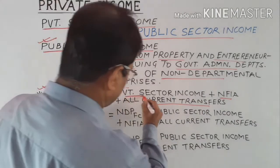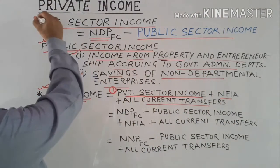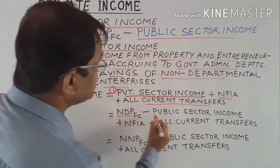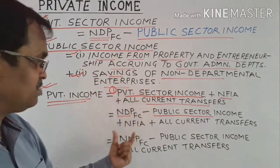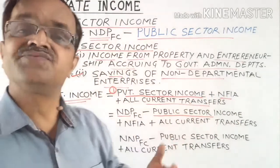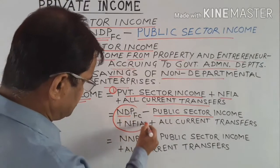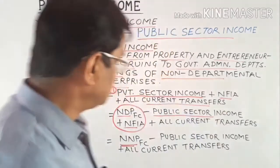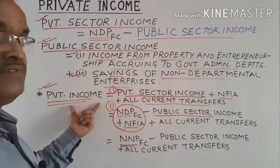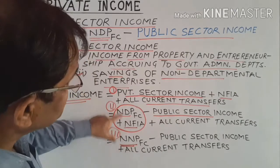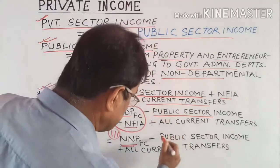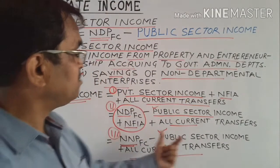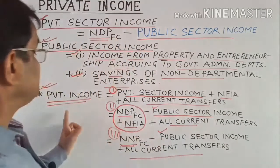If private sector income is not directly known, substitute it: Private Sector Income = NDP at FC minus Public Sector Income. So the second formula becomes: Private Income = (NDP at FC − Public Sector Income) + NFIA + All Current Transfer Incomes. Since NDP at FC + NFIA = NNP at FC (National Income), the third formula is: Private Income = NNP at FC − Public Sector Income + All Current Transfer Incomes.